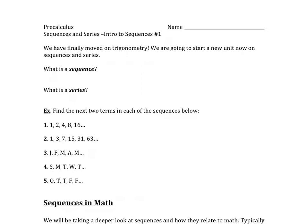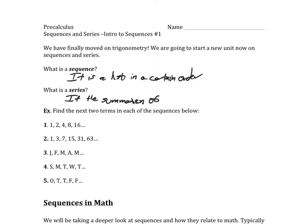A sequence is basically a list — and not just any list, but a list in a certain order. You may hear someone say 'a sequence of events,' meaning events that happened in a certain order, not just a random list. A series is similar but not quite the same thing: a series is a summation — the sum of a given sequence.